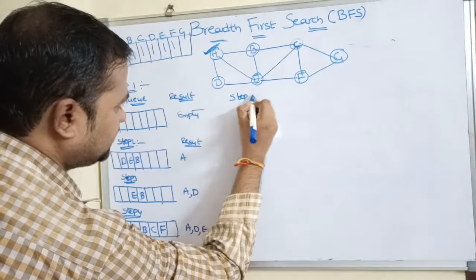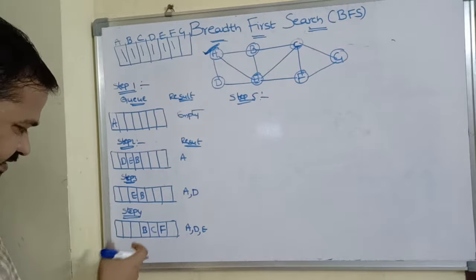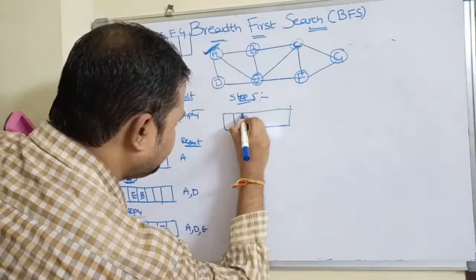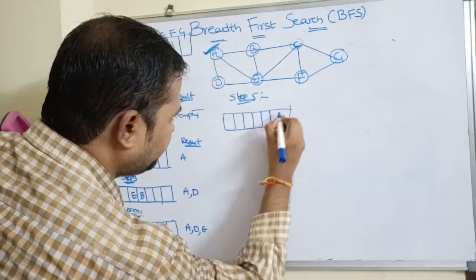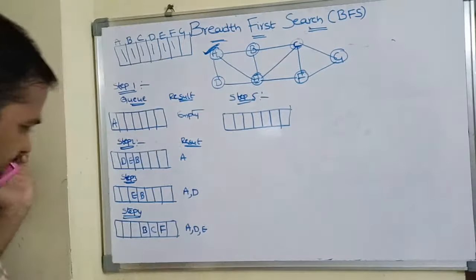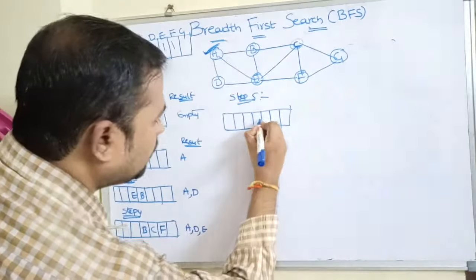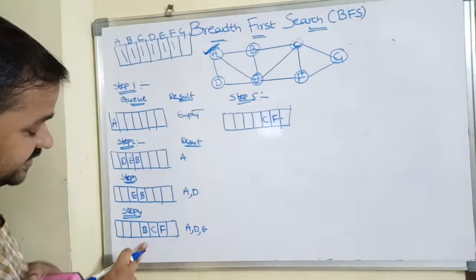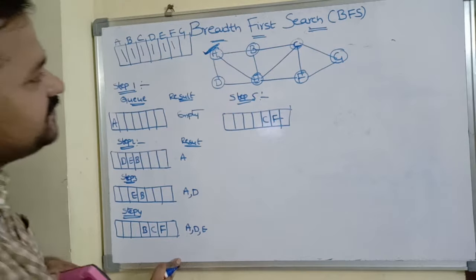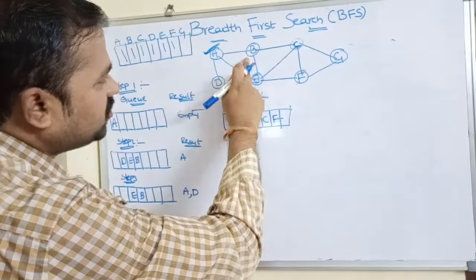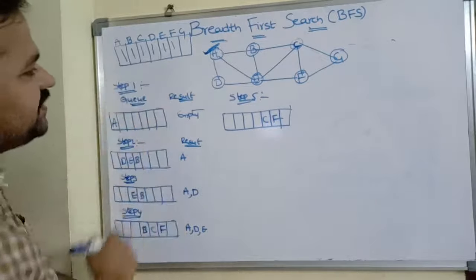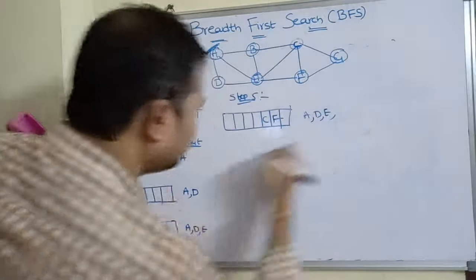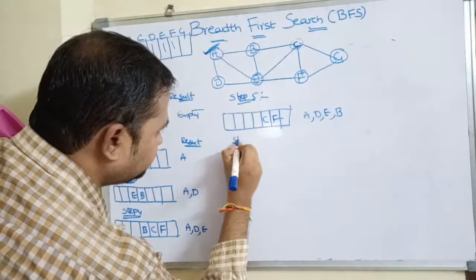Step five: delete B from the front of the queue and display it. The adjacent vertices of B are C and E. C is already visited and E is already visited, so there is no enqueue operation needed. Result so far: A, D, E, B.